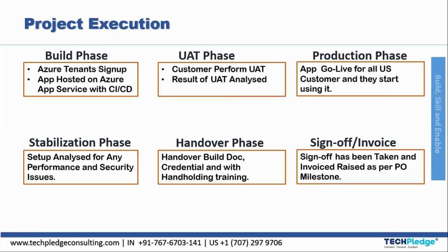Next is User Acceptance Test (UAT). The customer performs UAT after the build phase and the results are analyzed. If UAT fails, everything goes back to the build phase for corrections and UAT is repeated. Once UAT is validated and passed, the application moves into the Production phase, where it goes live for all customers who start using it. After production, the Stabilization phase analyzes the setup for any performance or security issues, bugs, and overall stability.